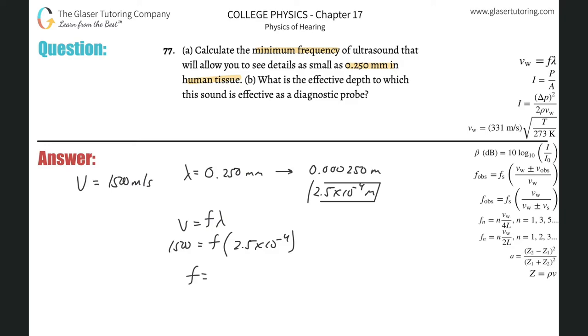Now we just plug it in. This is about 1500 divided by 2.5 times 10 to the minus fourth, and we get about 6.0 times 10 to the sixth hertz. That's the frequency. That takes care of letter a.